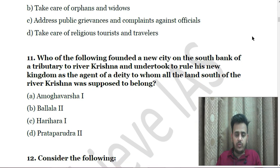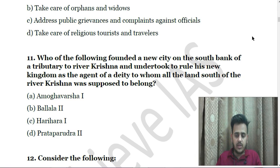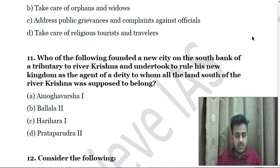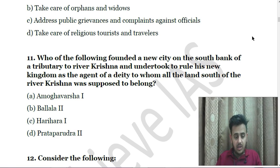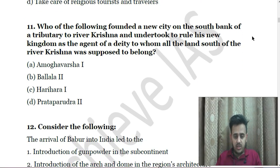Next: Who of the following founded a new city on the south bank of a tributary to river Krishna and undertook to rule his new kingdom as the agent of a deity to whom all the land south of the river Krishna was supposed to belong? A. Mokavarsha, B. Ballala, C. Harihara, D. Prataprudra. Note: the names are quite difficult to pronounce.